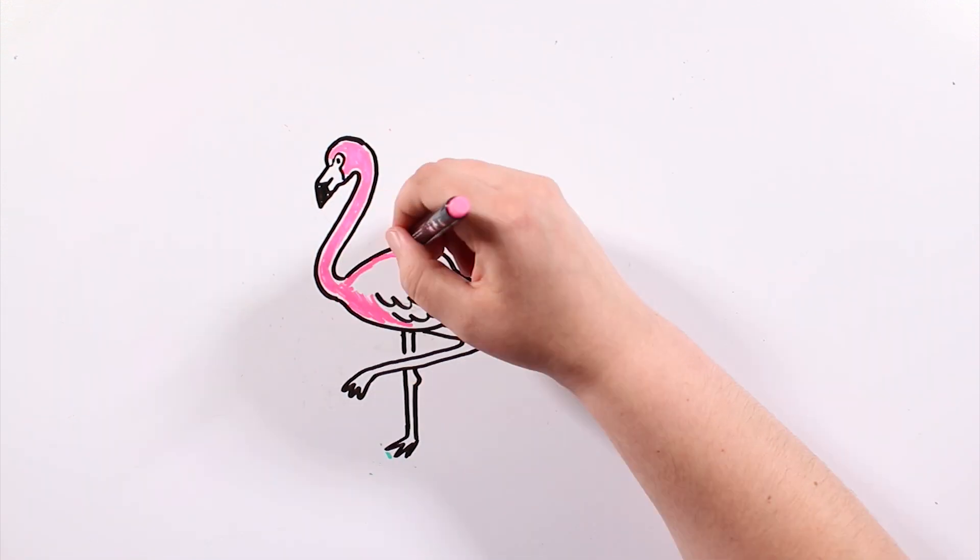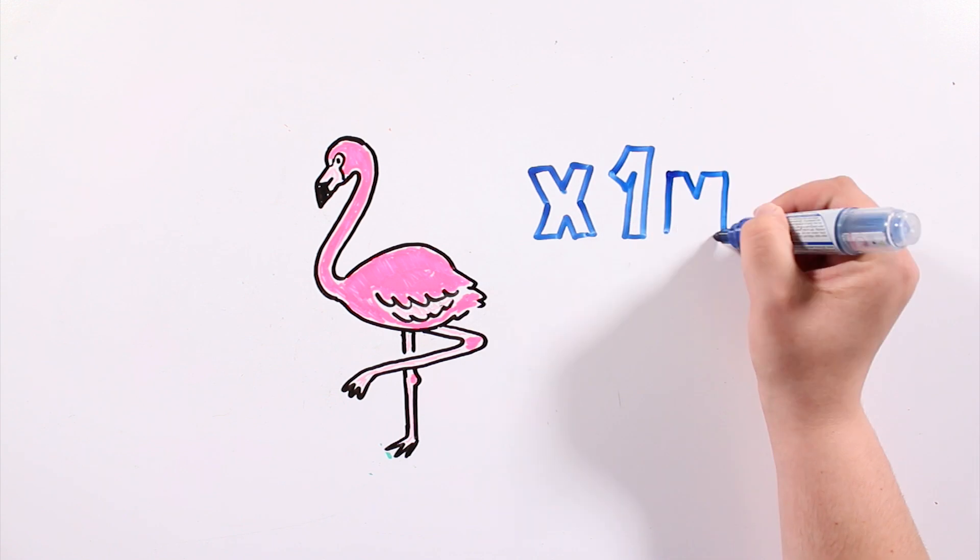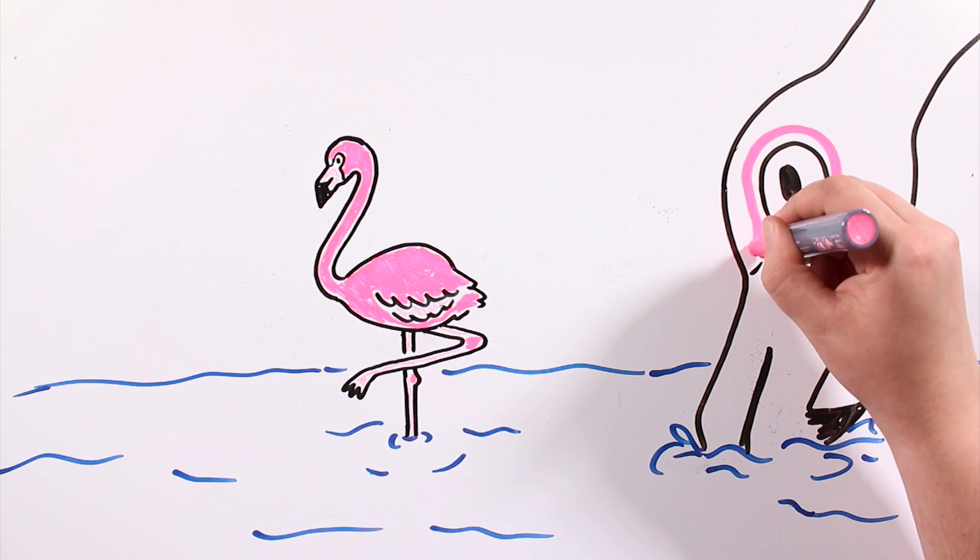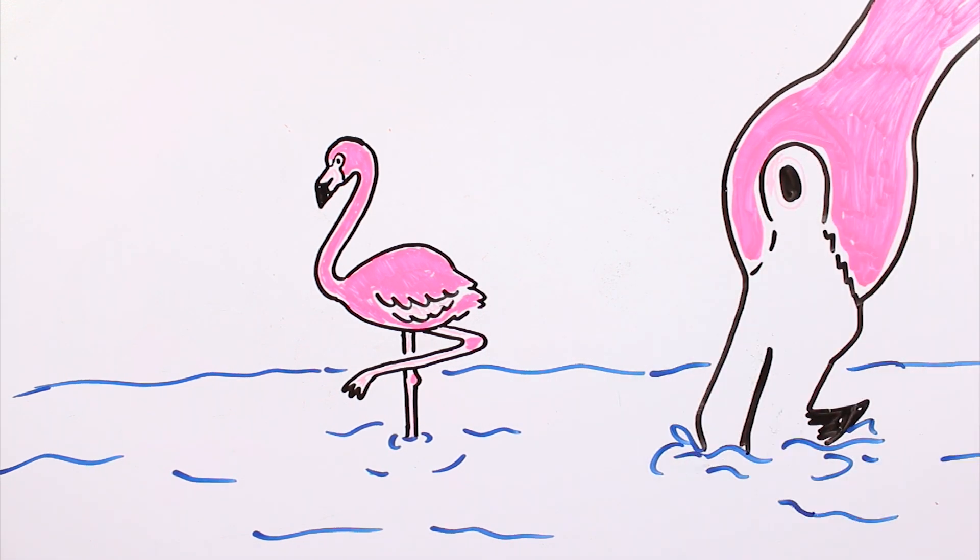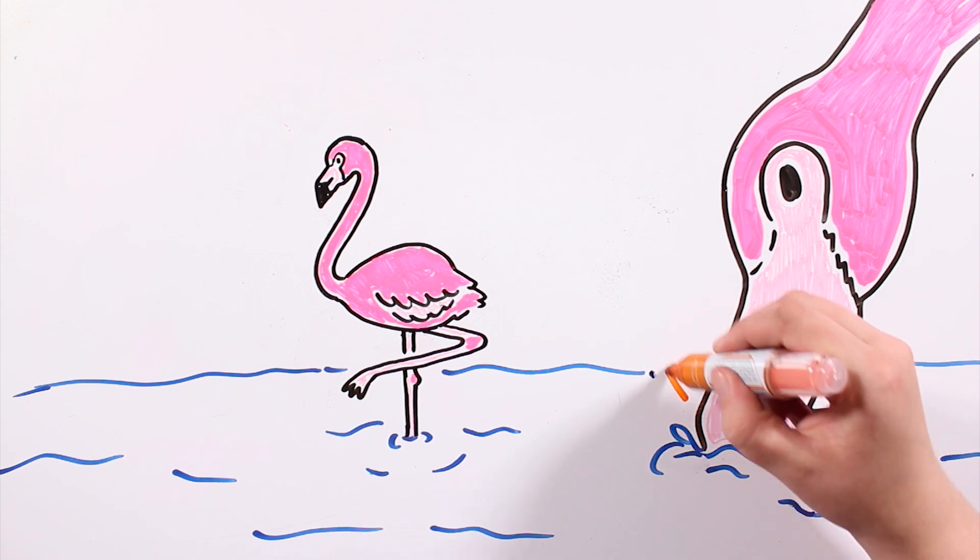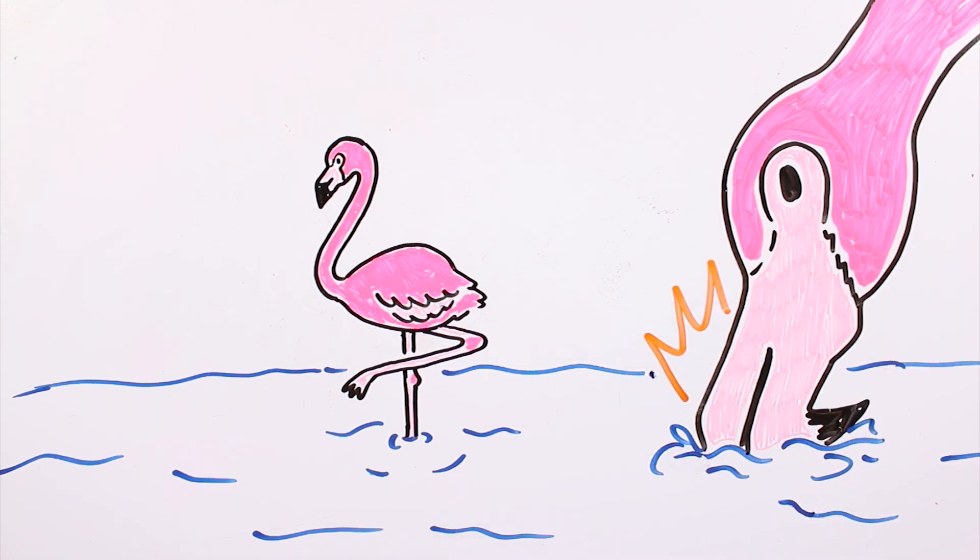Flamingos are interesting animals that fly in flocks that can have as many as a million individuals. They live in not very deep ponds to be able to catch the small crustaceans that stimulate that pink color. They submerge their curvy beaks on the bottom of the pond and move it from one side to another.